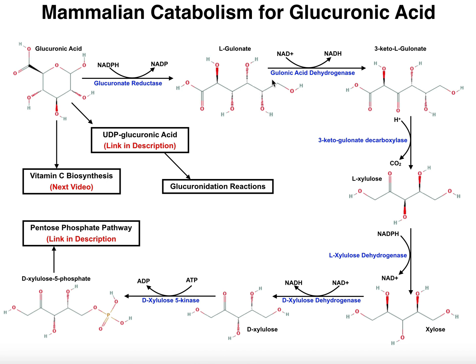This gulonate is going to be oxidized by gulonic acid dehydrogenase. It's going to take the electrons essentially from this oxygen right here and convert it into a carbonyl. Notice on the three position, we now have a carbonyl. This molecule is called 3-ketogulonate, and in this reaction we get out an NADH for energy.